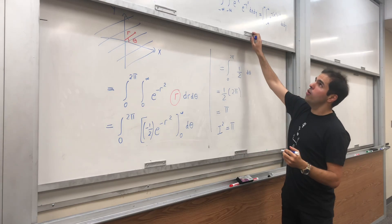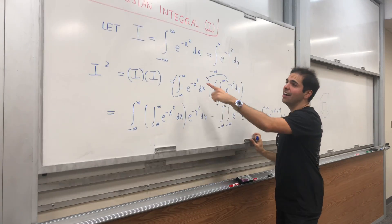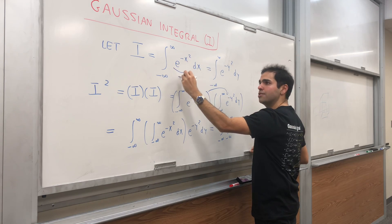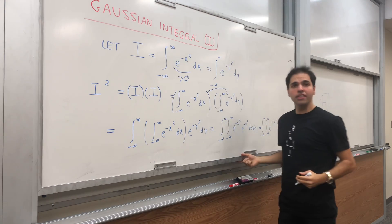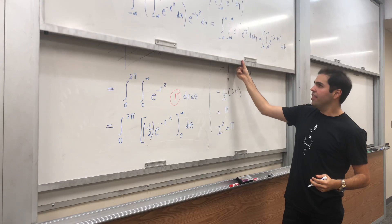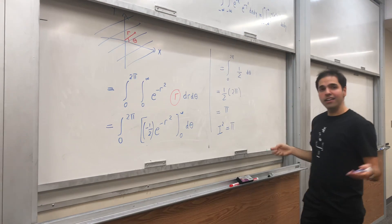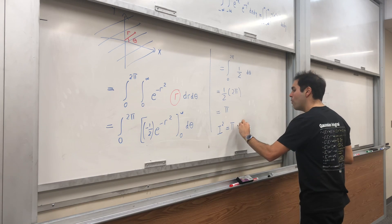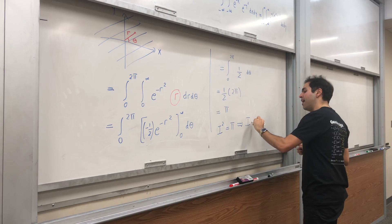But remember, what was I? I was this integral. Well, this function is positive, so the integral is positive. Therefore you may ask, is it √π or -√π? Well, it is √π because remember, I is positive.